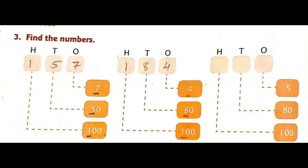Now let's go to the third question: find the numbers. In this question, they have given the expanded form of a number and you have to find the number. In question 2, they gave you the number and you wrote the expanded form — this question is the reverse. They have given 7 plus 50 plus 100. Start from the ones place and write only the digits: write 7 in ones place, 5 in tens place, 1 in hundreds place. Remove the zeros and write down only the digits.